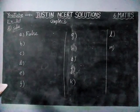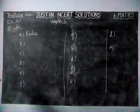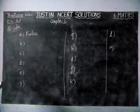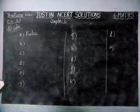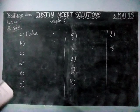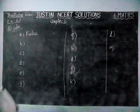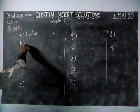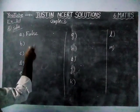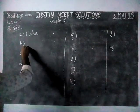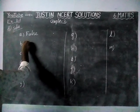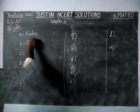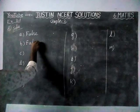Next, option B: '400 is the predecessor of 399.' Actually, 400 is the successor of 399. Therefore, this is also false.